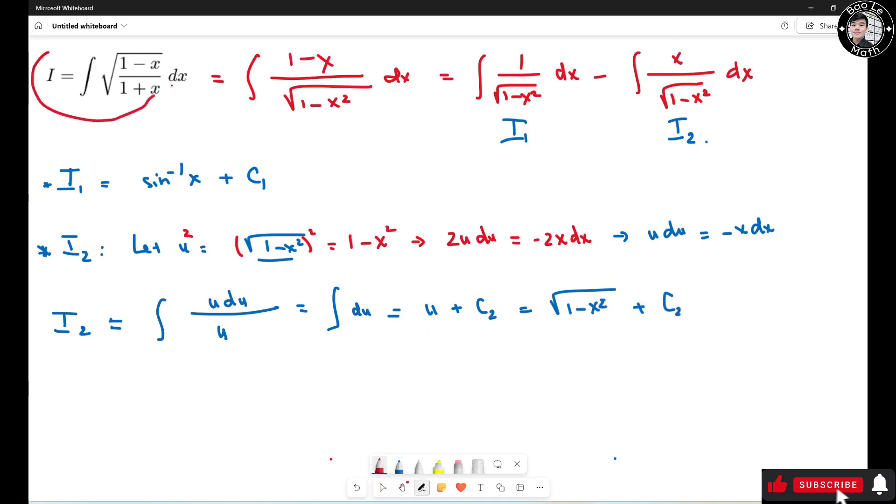Now finally, I becomes I1 minus I2. I1 is this guy. So it could be sine inverse of x plus I2, which means this guy. Square root of 1 minus x square.